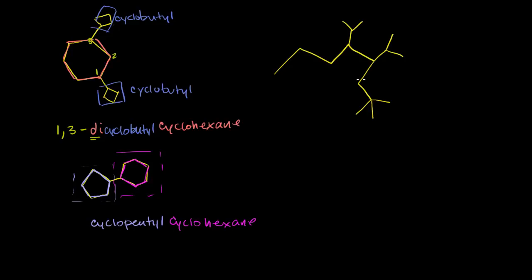Now let's try this one over here. There are no cycles here, but we have to identify the longest chain. To do that, let's just count it out. One path gives us 7 carbons — that's not the longest chain. Another path gives us 1, 2, 3, 4, 5, 6, 7, 8 — that looks like the longest chain. So let's make that the longest chain.